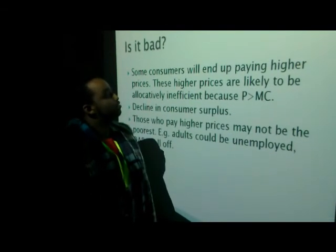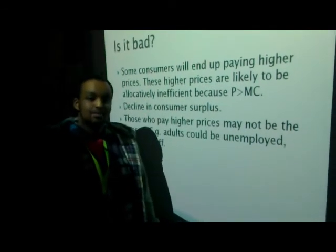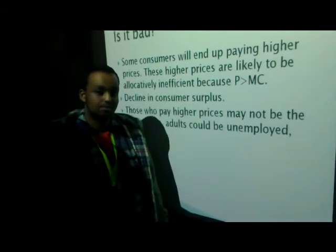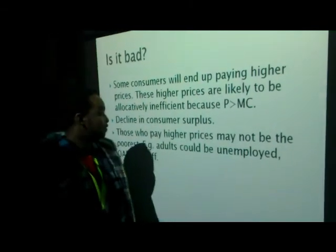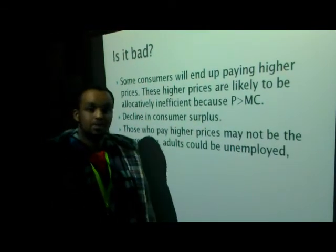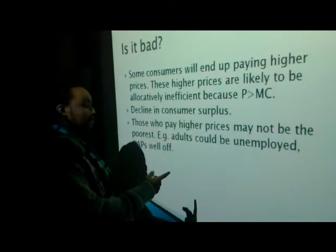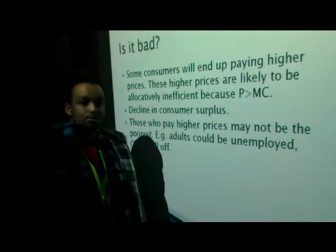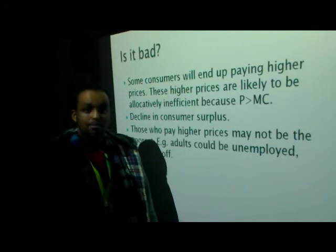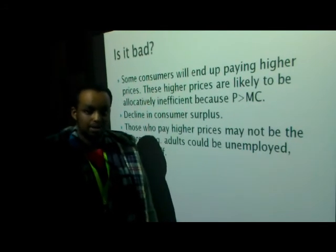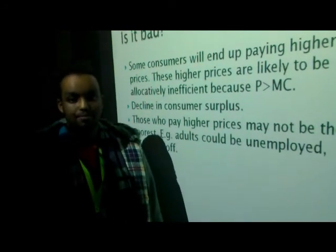Now we will look at why price discrimination is bad. Some consumers will end up paying higher prices, which is likely to be allocatively inefficient because prices are greater than marginal costs. There will be a decline in consumer surplus because consumers are getting ripped off, and those who pay higher prices might not be the poorest. For example, adults could be paying higher prices when unemployed, but well-off old age pensioners still get the same benefit.